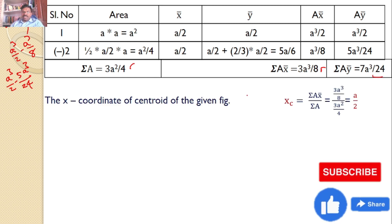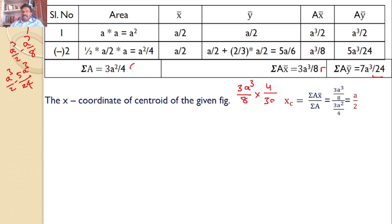Now, the x coordinate of the centroid is sigma A x bar by sigma A, that is 3a cubed by 8 by 3a squared by 4, 3a cubed by 8, 4 by 3a squared. Cancel left with a, 4 gets cancelled, you will get the value a by 2.